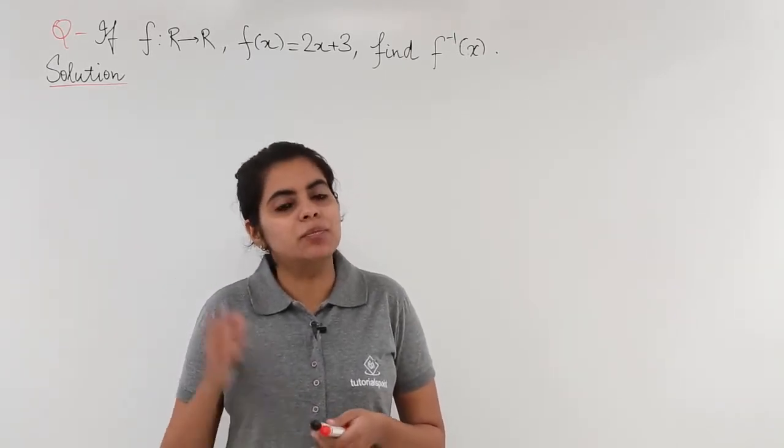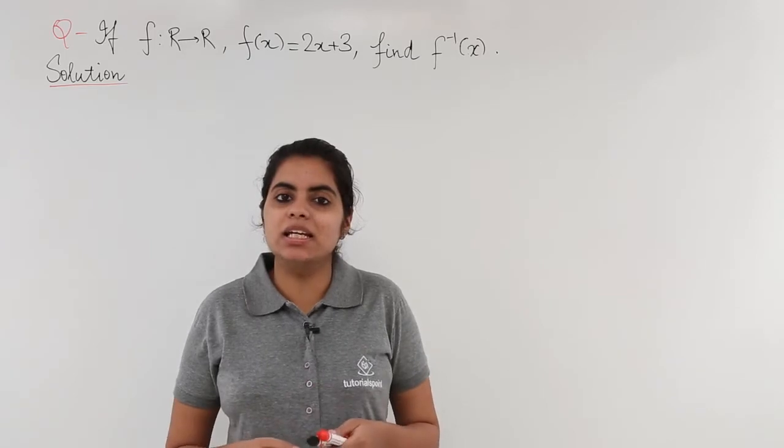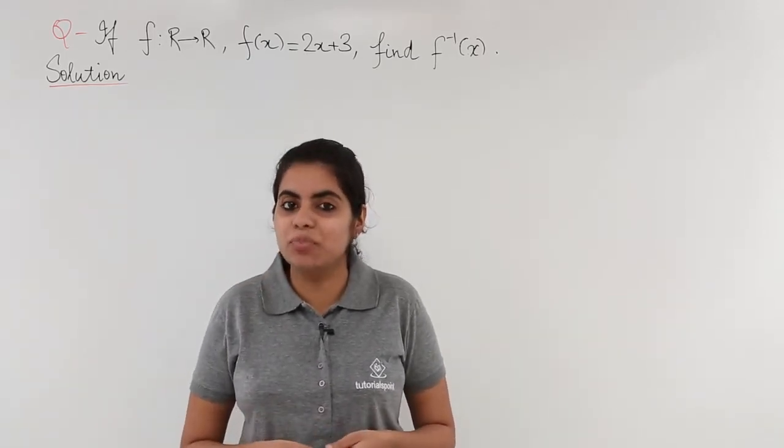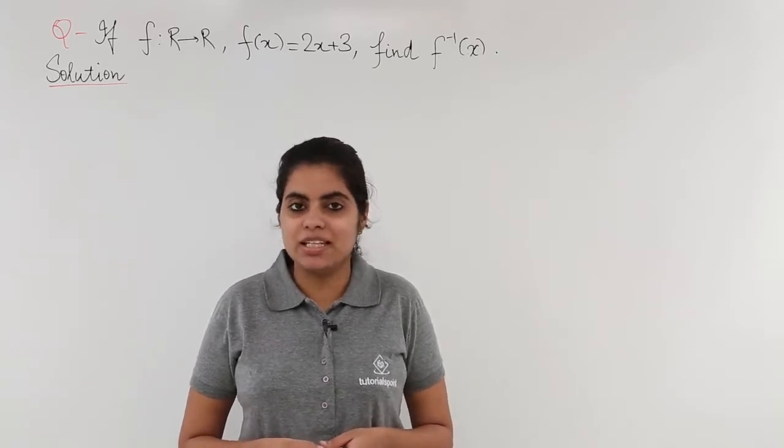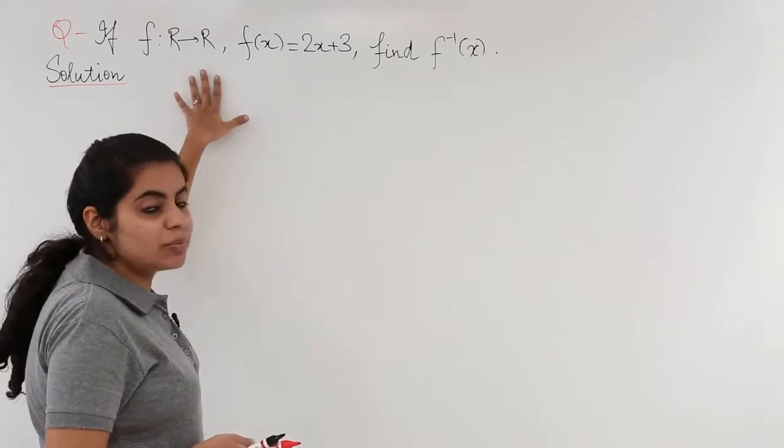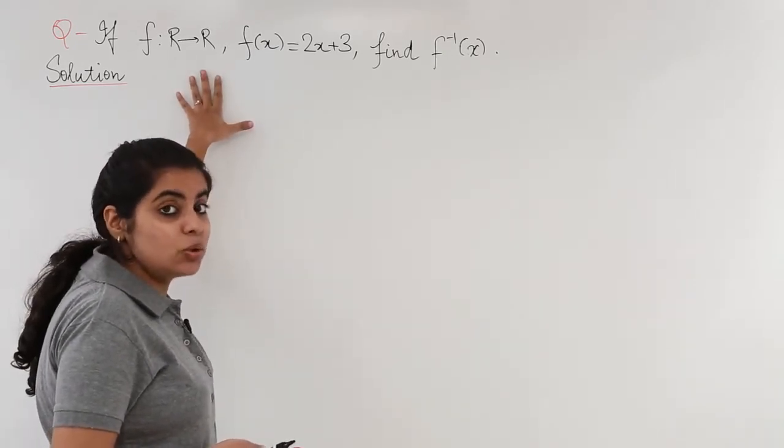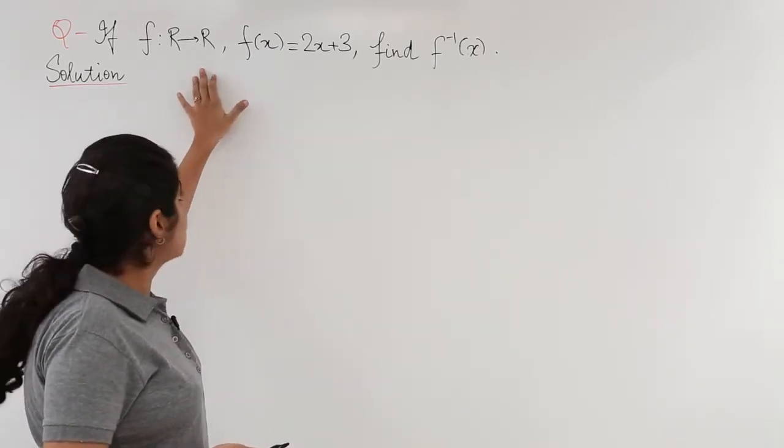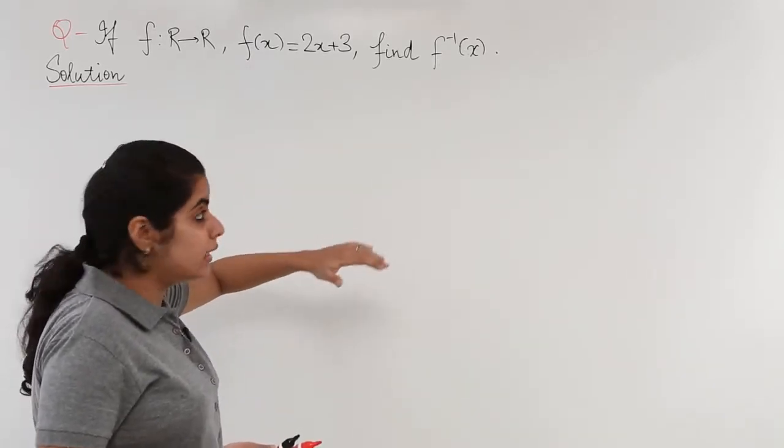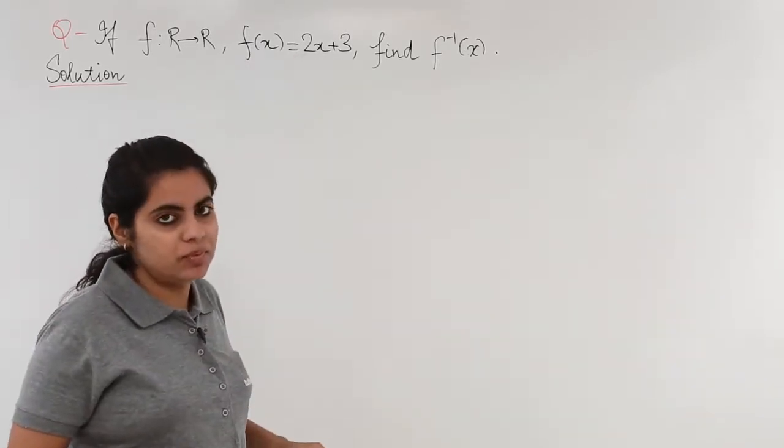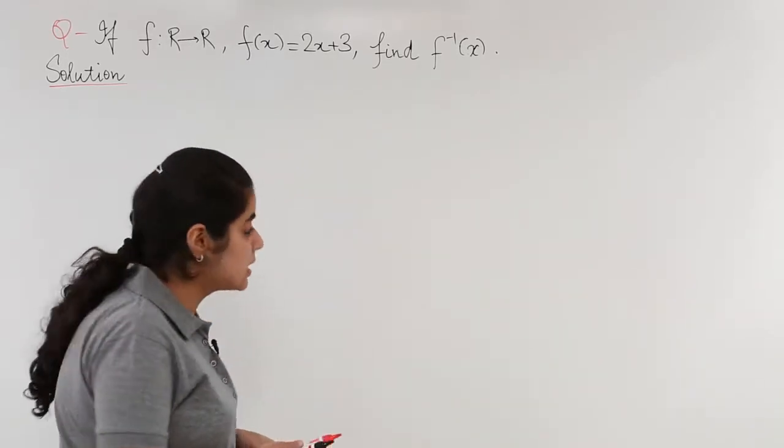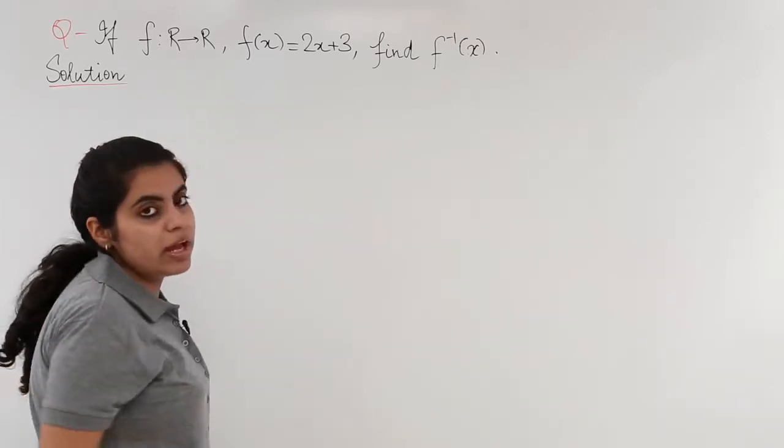In this question, let's see how to compute the inverse of an algebraic function. Let's read the question together. A function f: R→R is given, meaning the domain and codomain are both real numbers, and the function is f(x) = 2x + 3. We are asked to find f inverse of x.